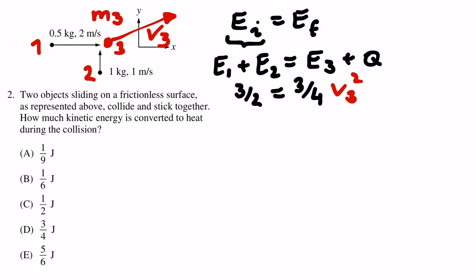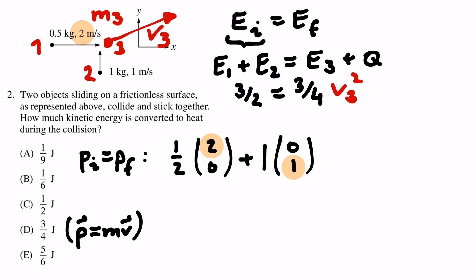The total momentum before the collision equals the total momentum afterwards. Momentum is mass times velocity, and since there are vector quantities, we denote the equation like this. Mass times velocity in x direction plus other mass times velocity in y direction equals the third mass, 3 over 2, times the velocity we want to calculate.